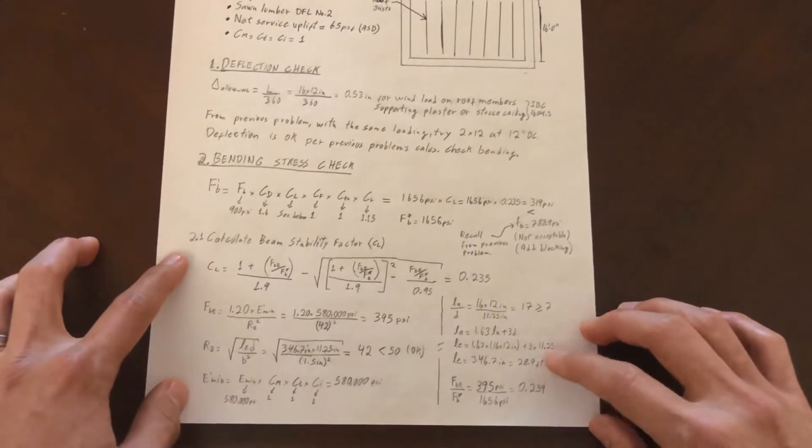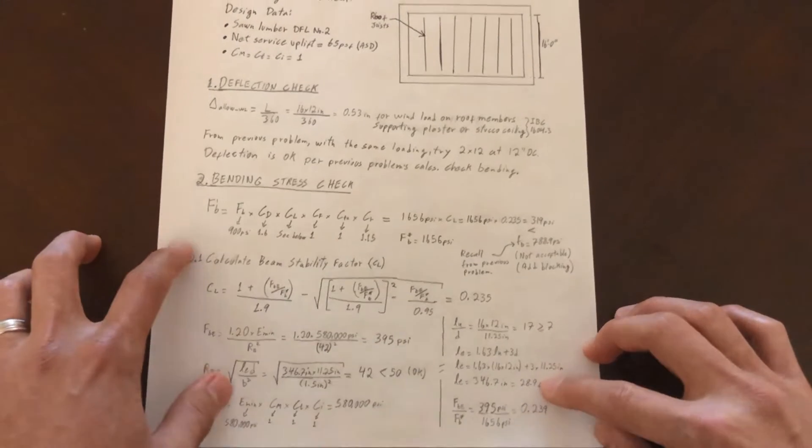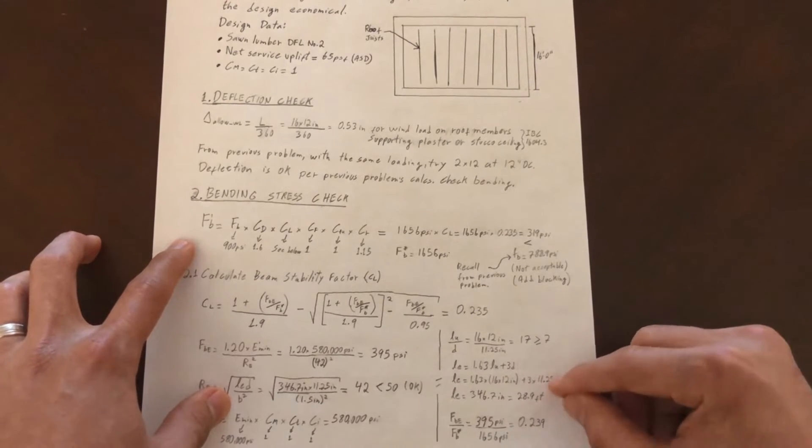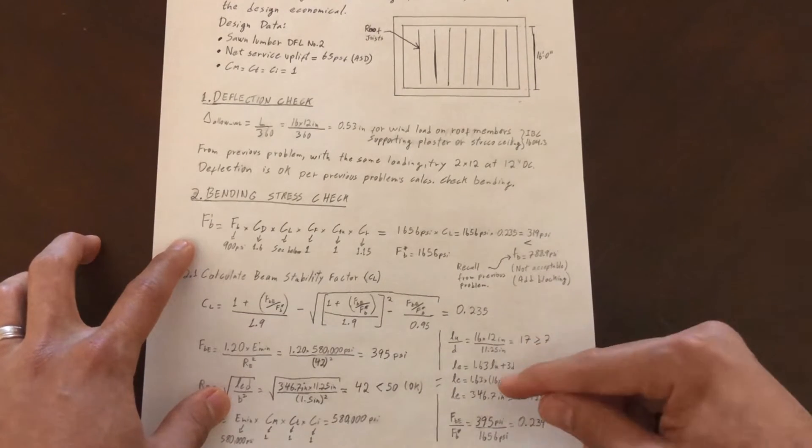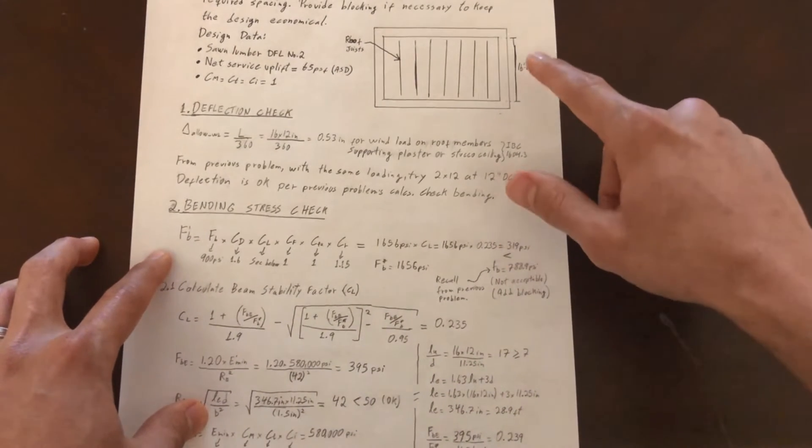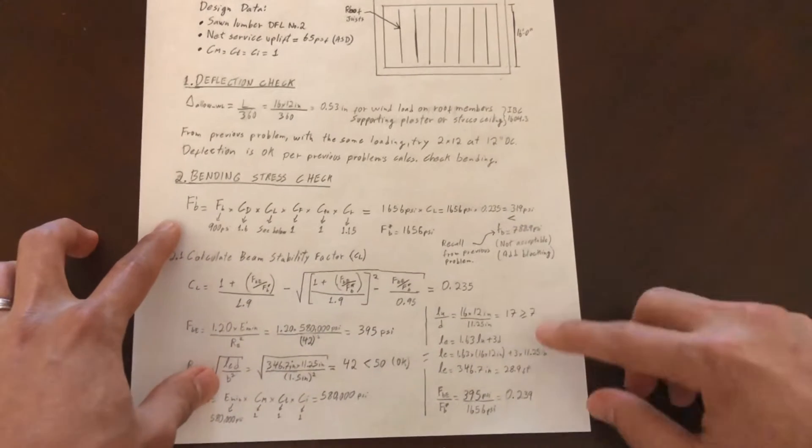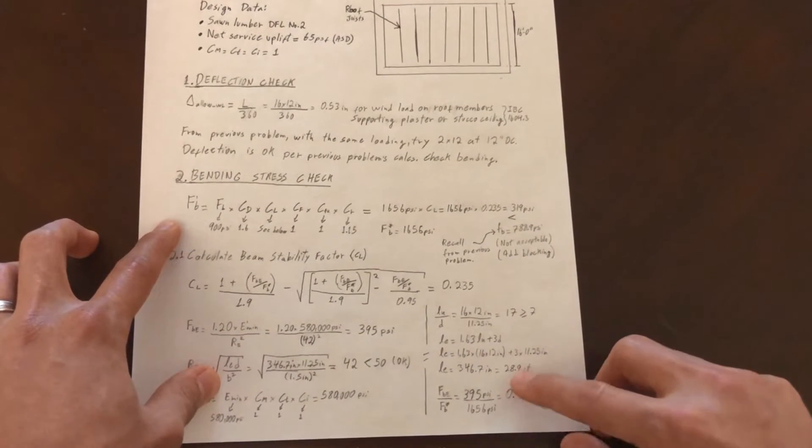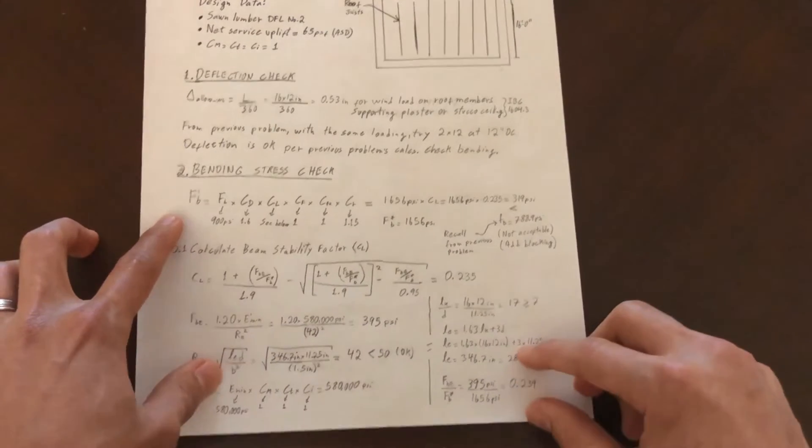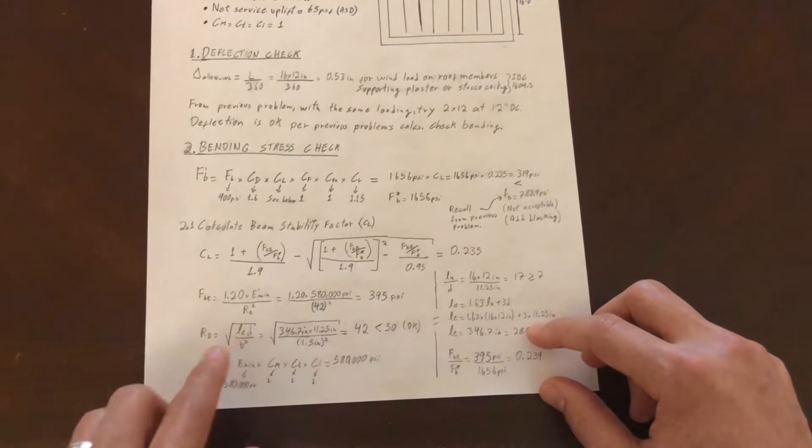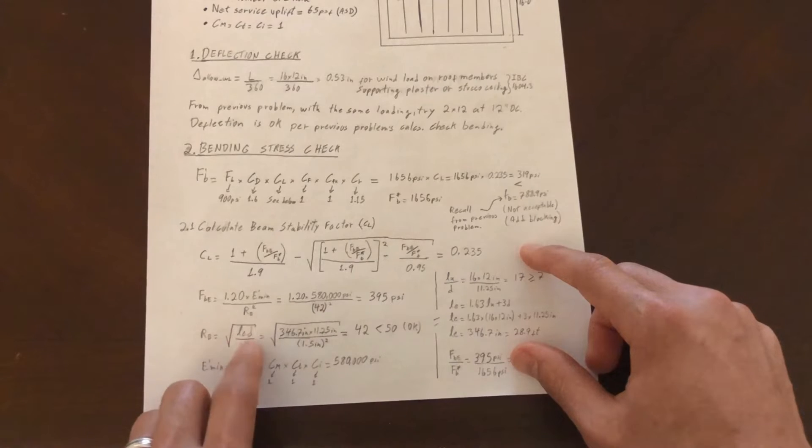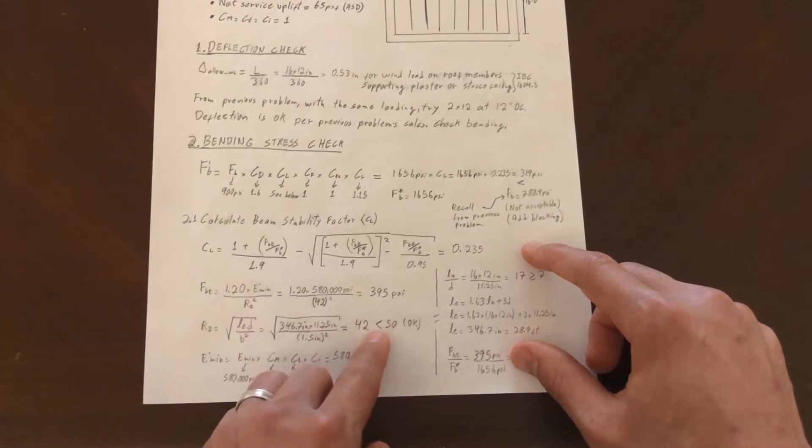This is very important, so make sure you don't mess this up because it can drastically change the results. Even when I was doing this, I initially had messed up and had to correct this because it's so easy to skip over this length and just use the span length. But the span length here is 16 feet as opposed to LE, the effective length, being almost 30 feet - so it's almost double. Just be careful with that.